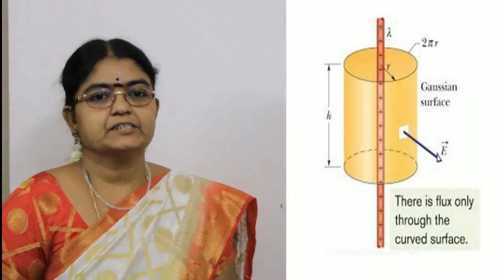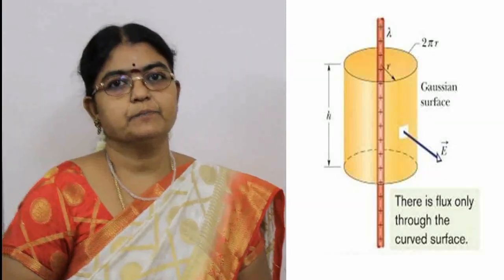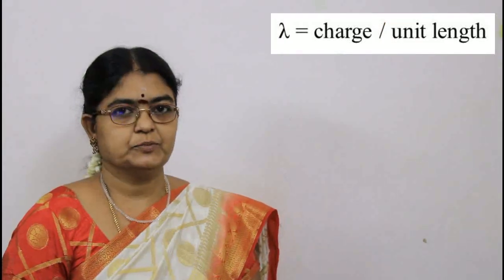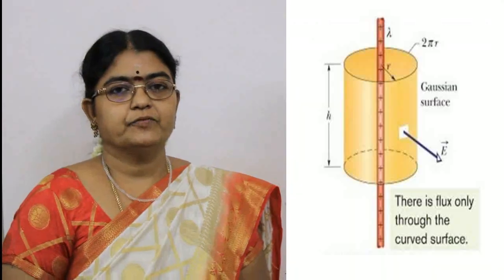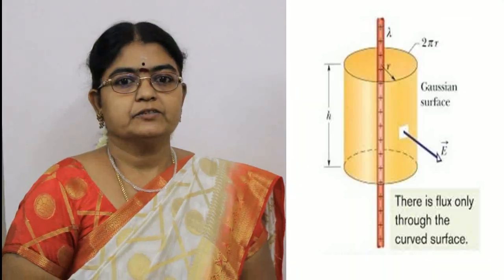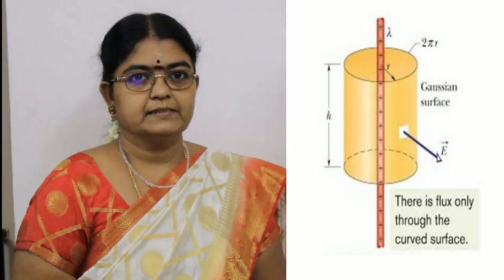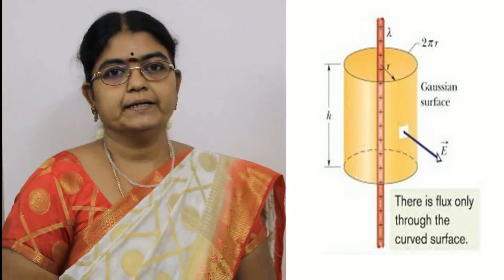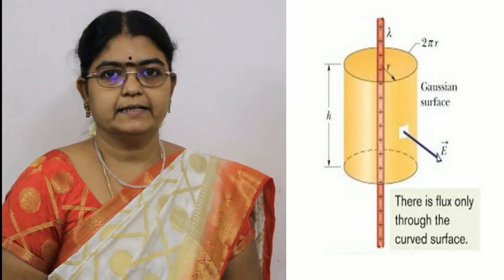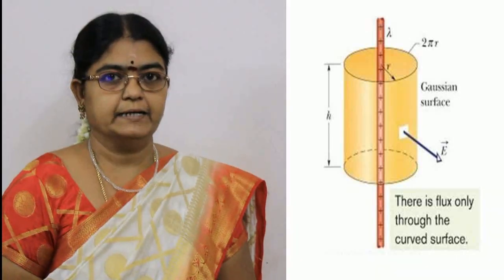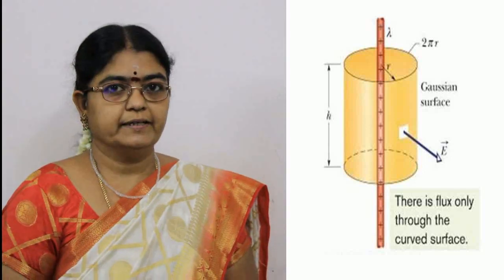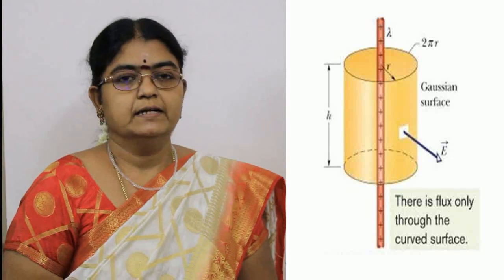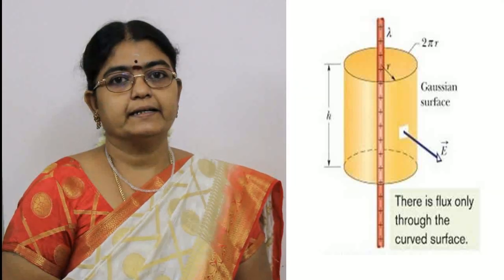The figure shows a section of an infinite line of charge of constant positive linear charge density. Let us define the linear charge density lambda as the charge per unit length. We want to find the electric field at a distance R from the line. We have to choose a Gaussian surface that should match the symmetry of the problem. We can choose a Gaussian surface to be a circular cylinder of radius R and length H, closed at each end by plane caps normal to the axis. The electric field E is constant over the cylindrical surface and perpendicular to the surface, pointing radially outward.